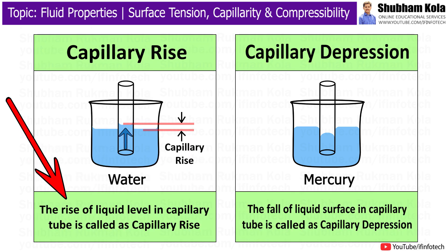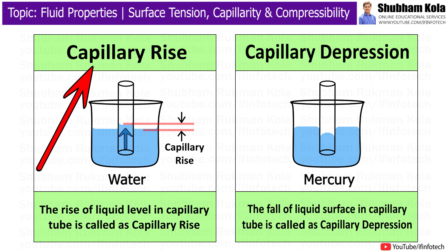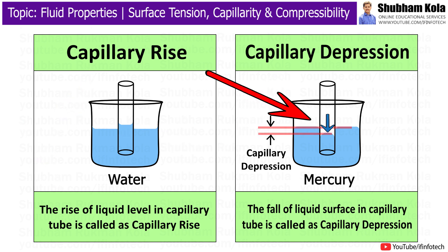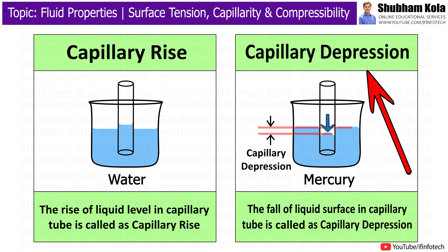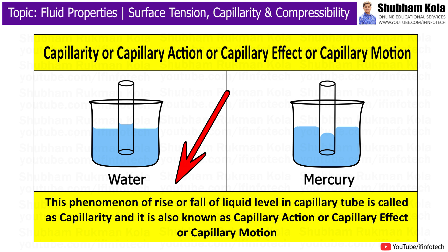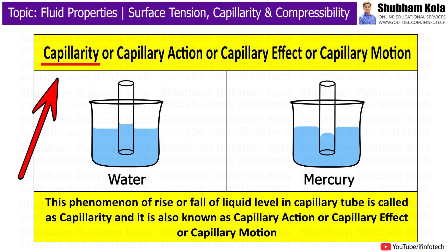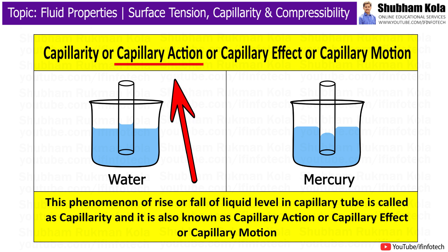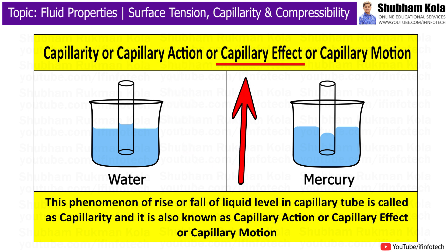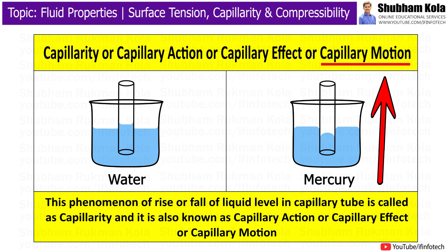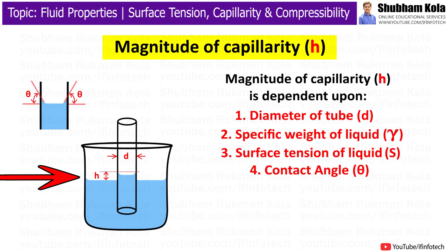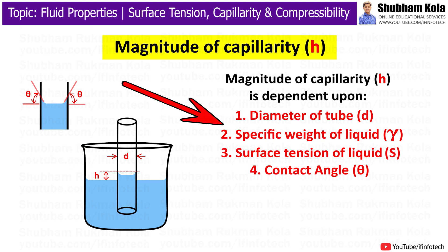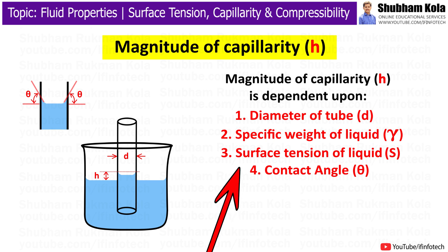The rise of liquid level in a capillary tube is called capillary rise, whereas the fall of liquid surface in a capillary tube is called capillary depression, expressed in centimeters or millimeters of liquid. This phenomenon of rise or fall of liquid level in a capillary tube is called capillary action, capillary effect, or capillary motion. The magnitude of capillary effect depends upon the diameter of the tube (d), specific weight of the liquid (gamma), the contact angle (theta), and the surface tension of the liquid (S).